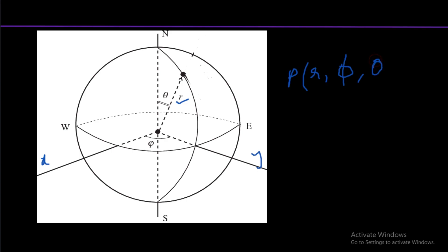The last parameter is theta — the angle which the radius makes with the z-axis. So we have: the angle theta, the angle phi, and the radius to reach our destination point P. I can move anywhere within the boundaries of the sphere. By varying the radius I can move inside or outside, by varying phi I can sweep the x-y axis, and by varying theta I can move up and down.